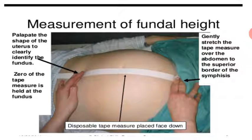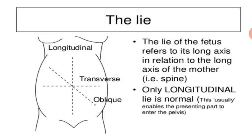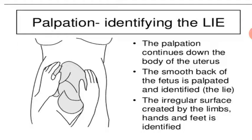The lie of the fetus refers to its long axis in relation to the long axis of the mother. Only a longitudinal lie is normal. There are three types of lie: longitudinal, transverse, and oblique. The lie usually enables the presenting part to enter the pelvis.